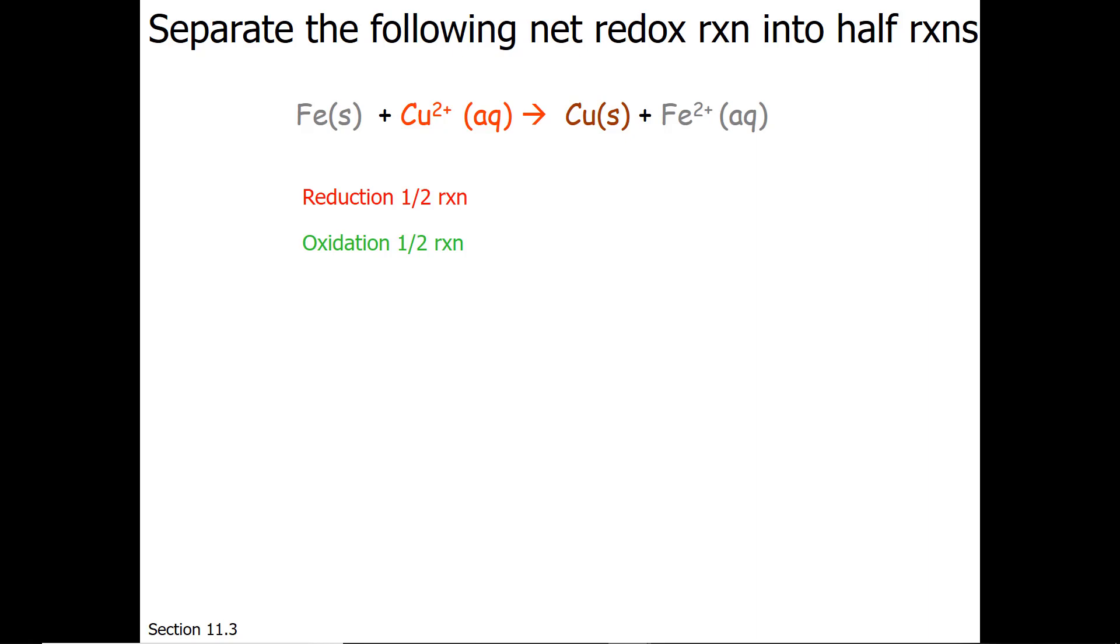Let's separate the reduction half reaction and oxidation half reaction. The reduction half reaction is when the oxidation state goes down and electrons are gained or added to the reactant. So that would be Cu2+ plus 2 electrons going to copper solid.